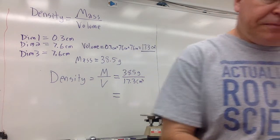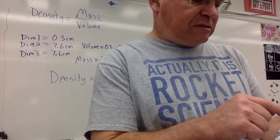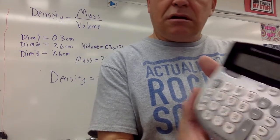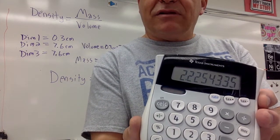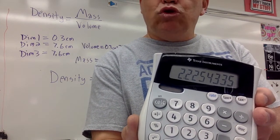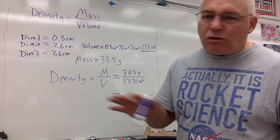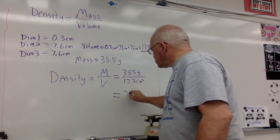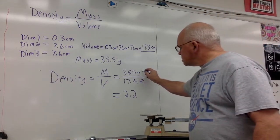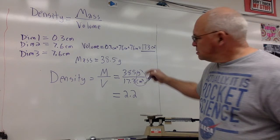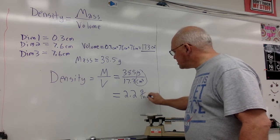Equal to 38.5 divided by 17.3. Again, we round it to the nearest tenth. Sorry about all the reflections there. Comes out to 2.2. Remember, all those extra decimal points, they don't mean anything. 2.2. And what are our units? There they are right there. Grams per cubic centimeter. And that is our density of our rectangular prism.